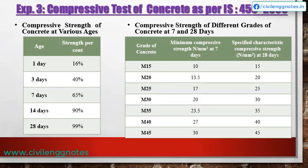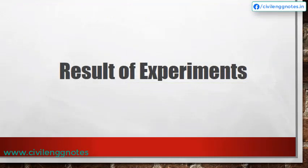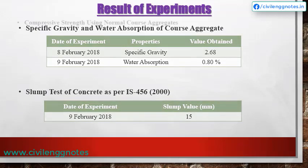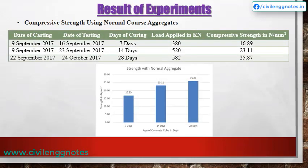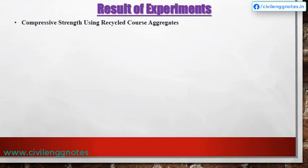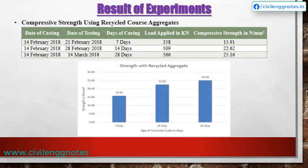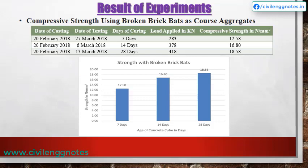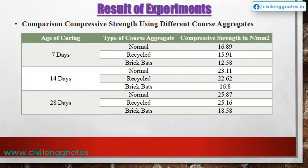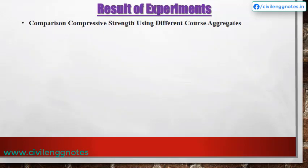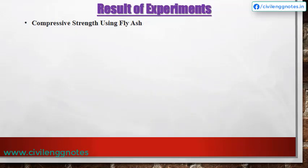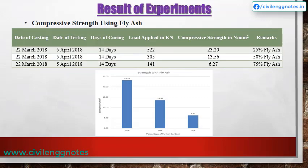Results of experiments: For specific gravity and water absorption test of coarse aggregate, we got the following results. We also obtained a slump value of 15 mm. For compressive strength using normal coarse aggregates, recycled coarse aggregates, and brick bats, we obtained comparative results. A graphical representation shows the compressive strength for different coarse aggregates. When cement content was replaced with fly ash at 25%, 50%, and 75%, the following compressive strength values were obtained.